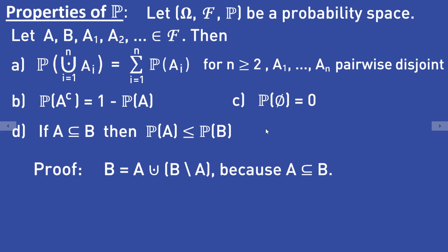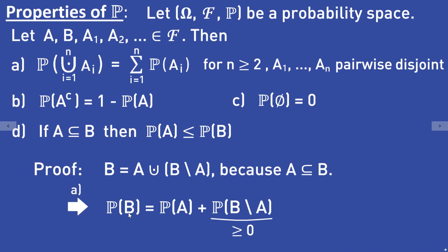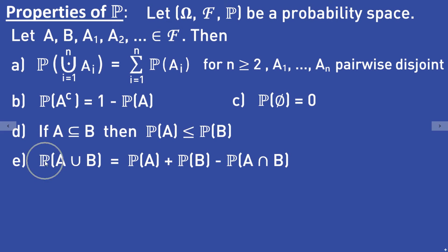Monotonicity follows from the fact that B is the union of the sets A and B without A, which works because A is a subset of B. These two sets A and B without A are disjoint, so it follows from finite additivity that the probability of B equals the probability of A plus the probability of B without A. Since probabilities are non-negative, this is greater than or equal to the probability of A. Furthermore, the probability of the union of A and B equals the probability of A plus the probability of B minus the probability of the intersection of A and B.